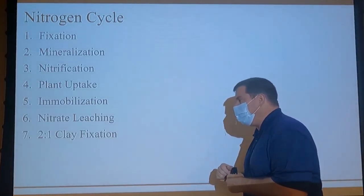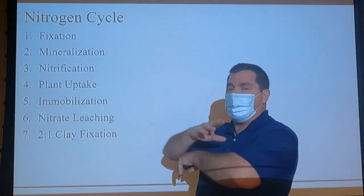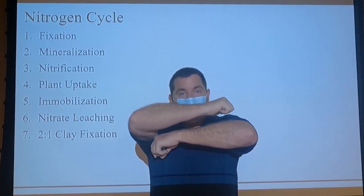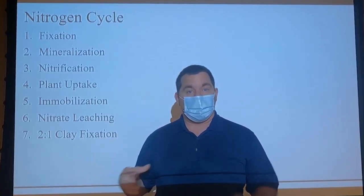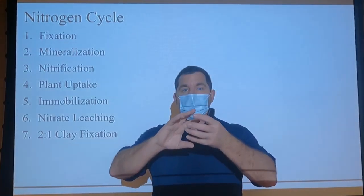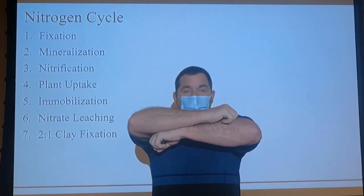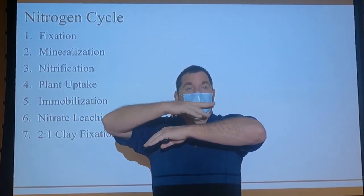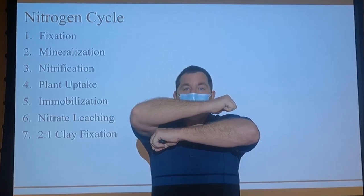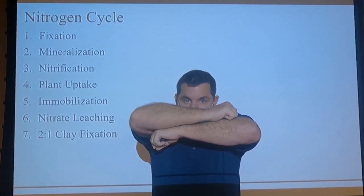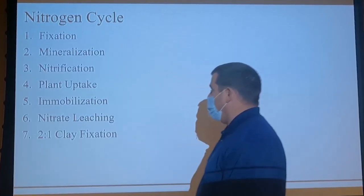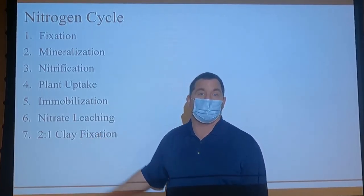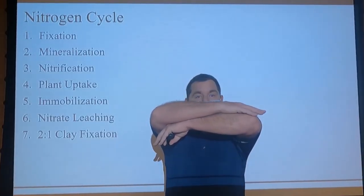Going the other way: these clay layers can expand and potassium gets fixed inside those inner layers. Ammonium and potassium are fairly similar in size. So if we have a clay layer that gets wet and expands and we have a greater ammonium concentration, the ammonium can be substituted for the potassium. When the soil dries, it gets trapped between those clay layers. So you might have applied fertilizer and the plants can't access it because it's trapped inside those inner layers of 2:1 clay.